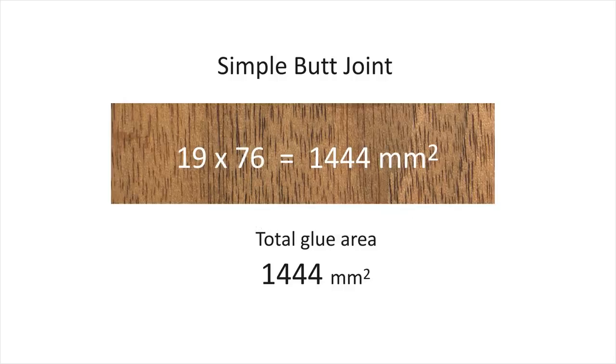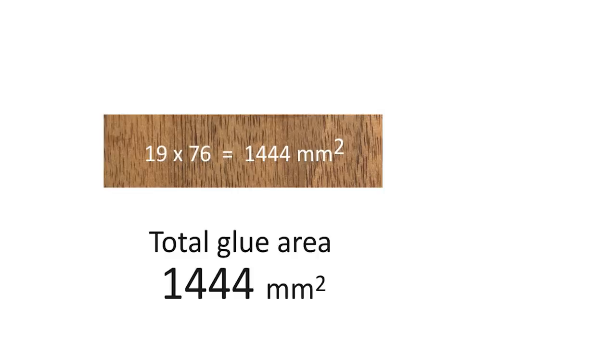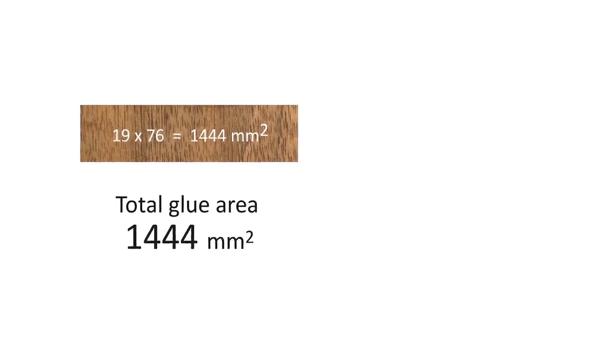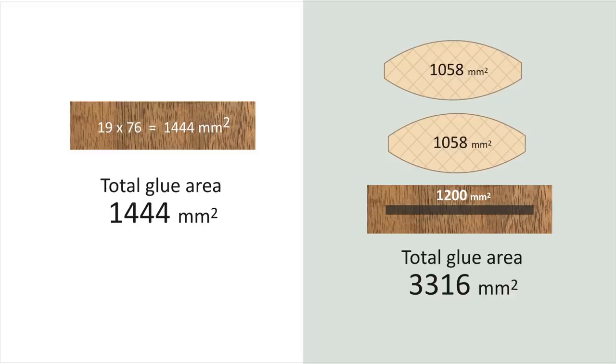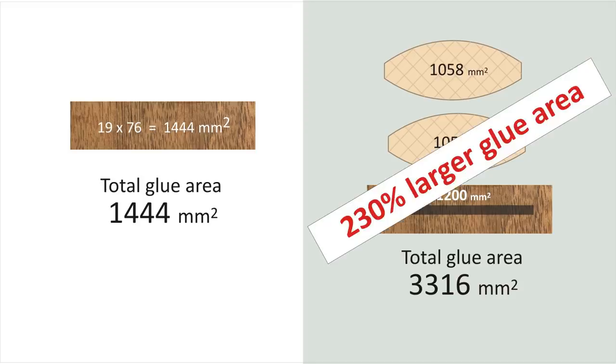But wait, that can't be right. This big biscuit dramatically increases the glue surface area. Surely that must translate into greater strength. Most of us woodworkers take it for granted that the strength of glue joints is directly related to the glue area. However, in these tests, the number 20 biscuit more than doubles the glue surface area, but adds no extra peak strength. I didn't see that coming.